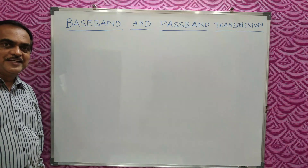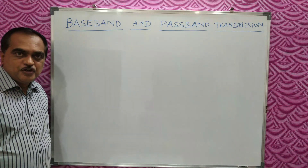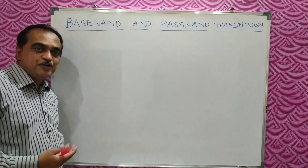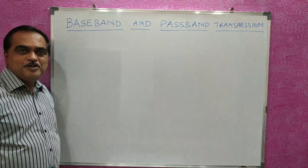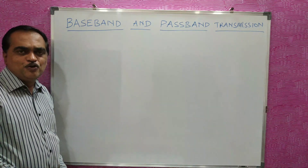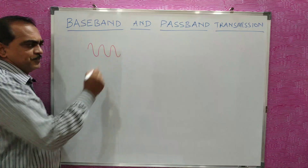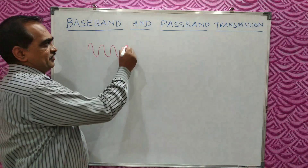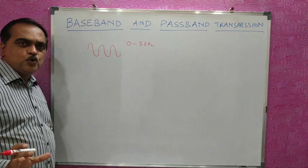Dear students, today we will study what we mean by baseband and passband transmission. Now, if you have a signal — whatever you speak or any video — if you convert that sound energy to electrical energy, it will be a low frequency signal. Similarly, if you convert a picture to an electrical signal, it will be a low frequency signal, with a frequency range of around 0 to 5 kHz.